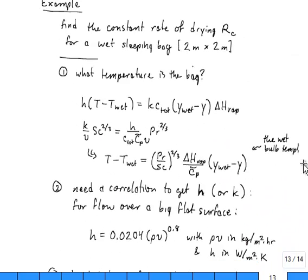Let's do another example and see how we would find the constant rate of drying, RC, during the constant rate drying period for a wet sleeping bag 2 meters by 2 meters across. This is a familiar situation for me. Wet sleeping bags are a pain and we would like to know how long it's going to take them to dry. In order to know that we have to know the rate at which they're drying.